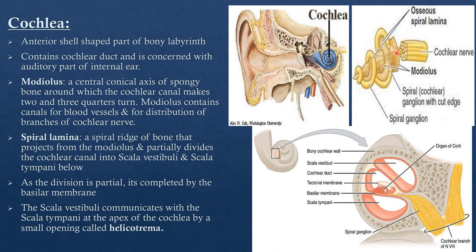The spiral lamina is a spiral ridge of bone projecting from the modiolus. It divides the cochlear canal into two parts: an upper part known as the scala vestibuli and a lower part known as the scala tympani. However, this partition by the spiral lamina is incomplete, and it is further completed by the basilar membrane.